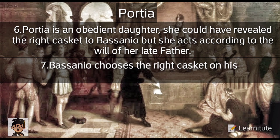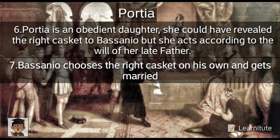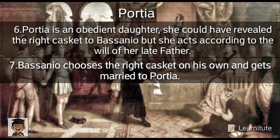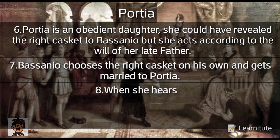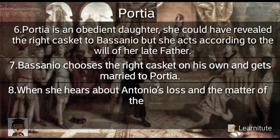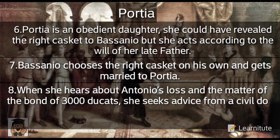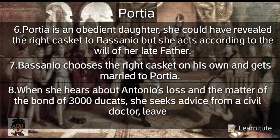By choosing the right casket, Bassanio gets married to Portia. When Portia officially becomes the wife of Bassanio, she hears about Antonio's loss and the matter of the bond of 3000 ducats. She seeks advice from a civil doctor and leaves for Venice dressed as a lawyer to save Antonio's life.